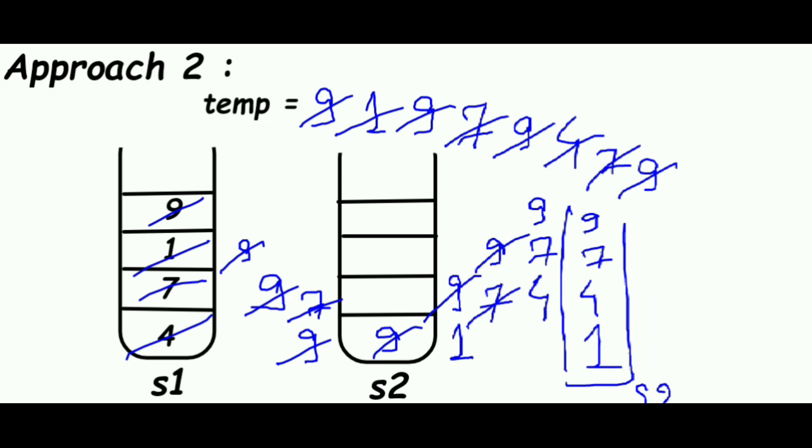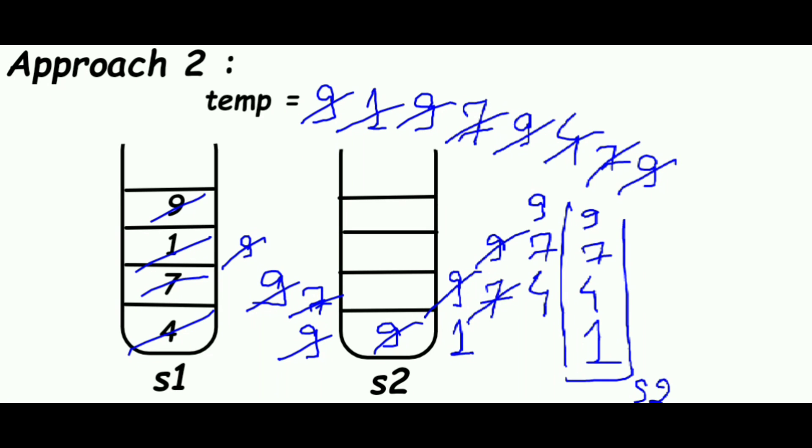And now we will pop each element from stack S2 and push each element to stack S1. The resultant stack will look like this: it will have 9 at the bottom, then 7, then 4, and at the top 1.